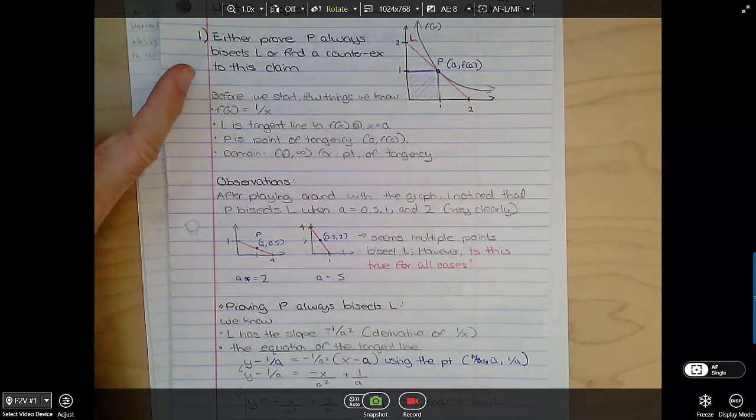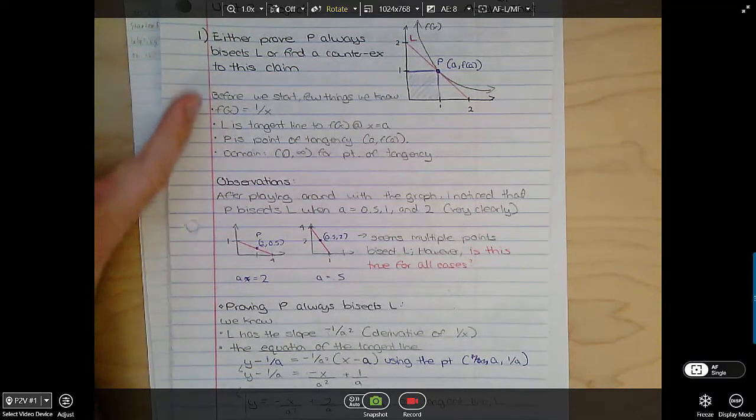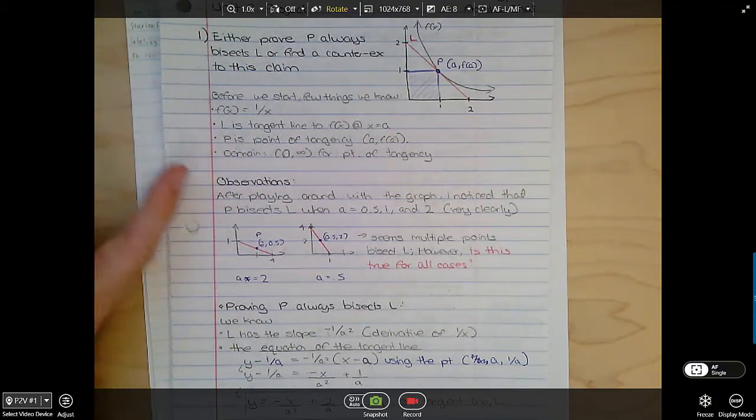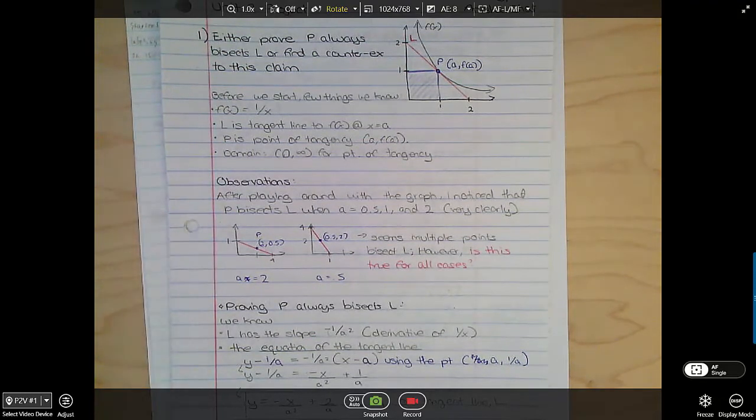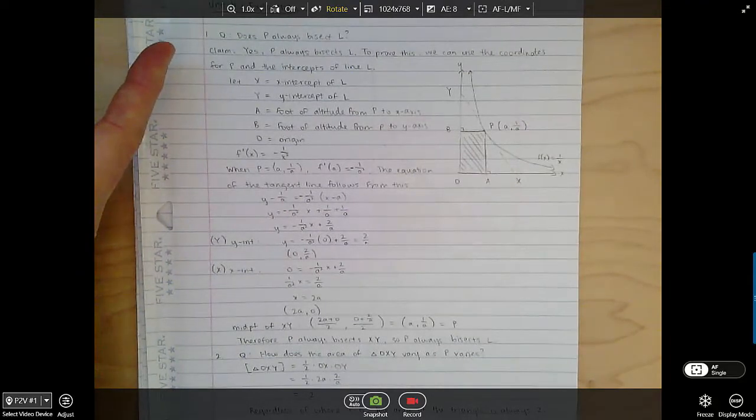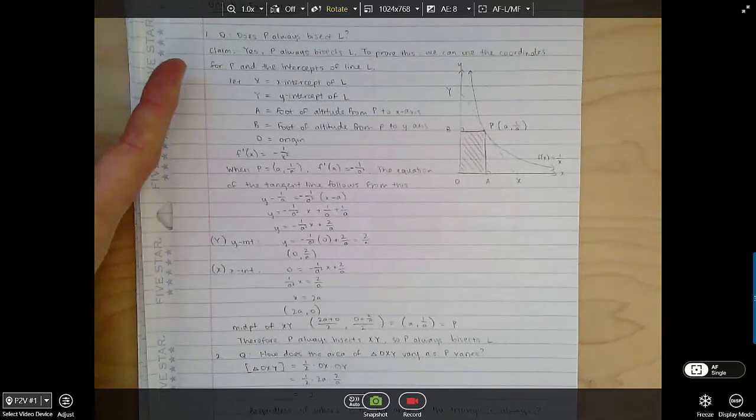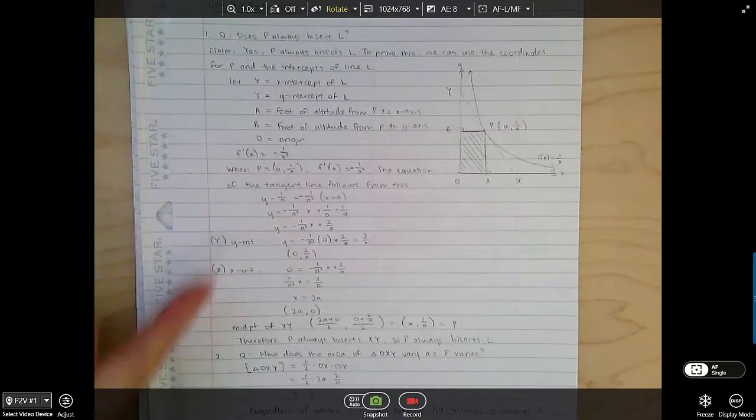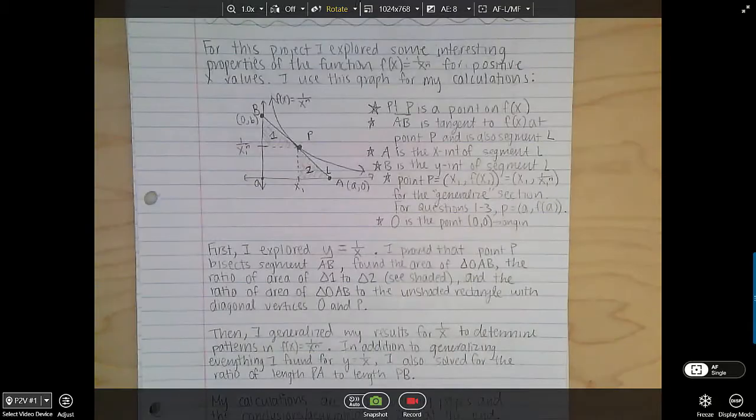This is one click better. At least this student wrote what it was that they were doing, but this is just a direct copy from my prompt: either prove P always bisects L or find a counterexample of this claim. Now the student is laying some foundations saying before we can do it we've got to define our things and then goes on from there.